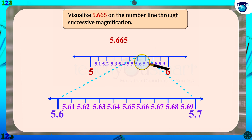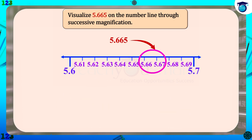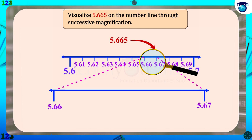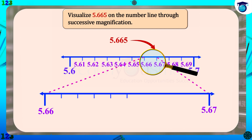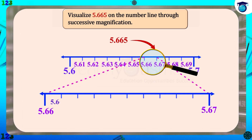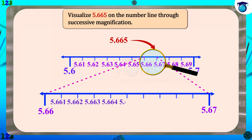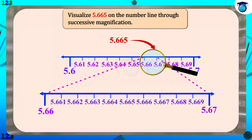5.665 is between 5.66 and 5.67. So by dividing the distance between 5.66 and 5.67 into 10 equal parts, we get the parts as 5.661, 5.662, etc. to 5.669. Now we get the visualization of 5.665 on the number line.